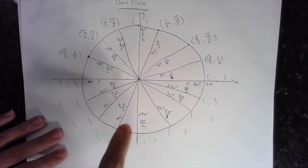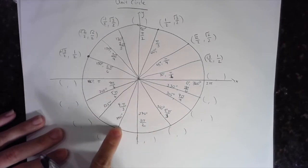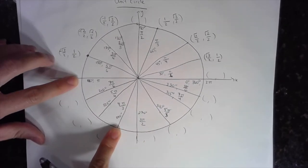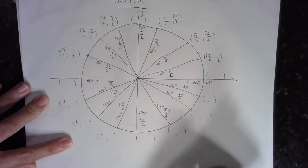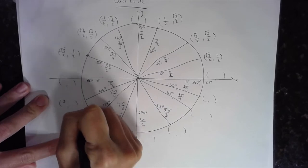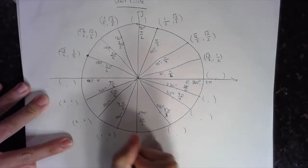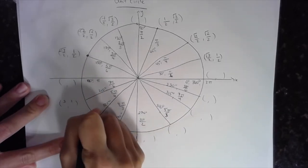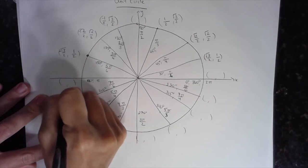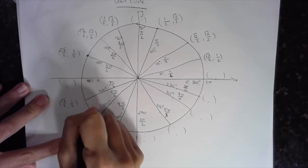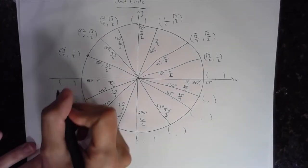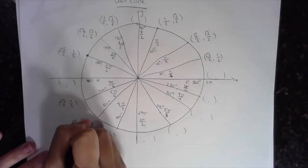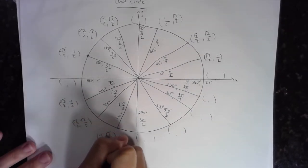For the points in quadrant three, I do the same thing — starting at the angle furthest from the horizontal, counting 1, 2, 3, then 3, 2, 1, dividing everything by 2, and square-rooting all numerators. Because I'm in quadrant three, both x and y coordinates are negative.